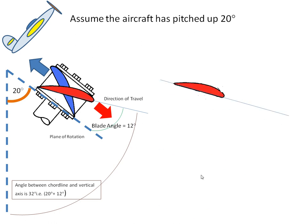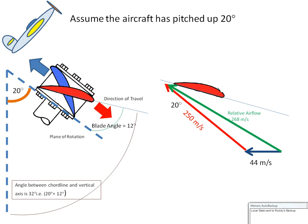Reproducing this over here on the right hand side, there's the chord line, there's our airspeed vector, there's our velocity in the plane of rotation, and that's offset by 20 degrees. That will give us a relative airflow of 268 meters per second. So the airflow has increased from 253 to 268 meters per second.